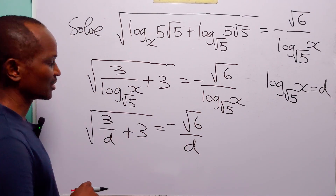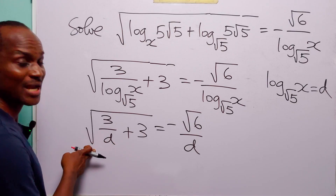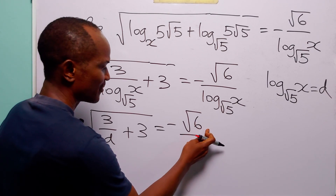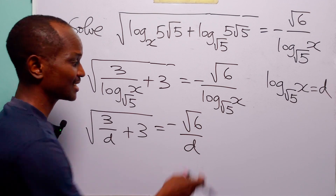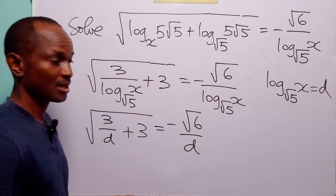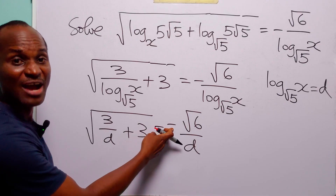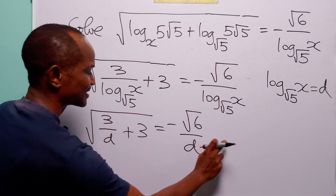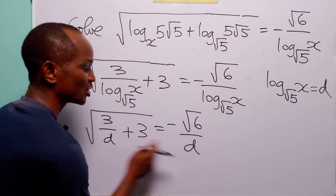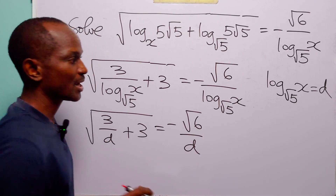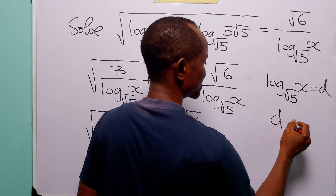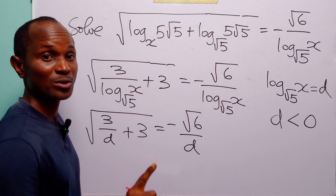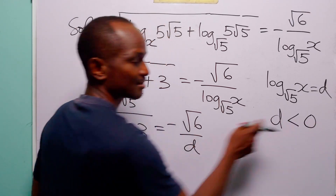Now let us look at this equation. On the right-hand side, we have the square root, which must be positive. And in the numerator, we also have the square root of 6, which is a positive number. But we have the negative sign, so the value of d that will satisfy this equation must be negative. We have that d must be less than 0 — not less than or equal to, but strictly less than 0.